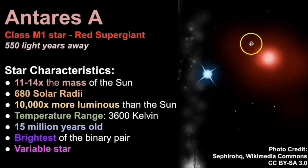Antares A, which is represented here in this artist's impression, is estimated to be 550 light years away. And it's classified as an M1 star. It's a red supergiant star. And it's estimated to have 11 to 14 times the mass of our own sun and 680 solar radii. And it's 10,000 times more luminous than our own sun. So this is just incredible to think about how large this star is. Yet it's relatively cool when we compare it to the sun. Its temperature range is 3,600 Kelvin. That's the reason for its colors.